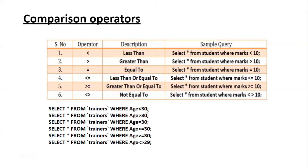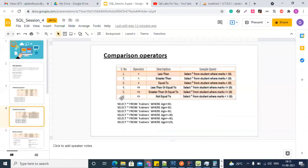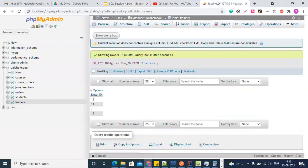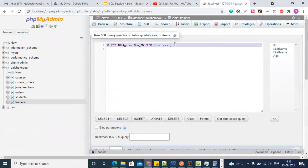In the trainers table we have an age column with different ages for different trainers. Based on different age comparisons we can see what output comes. For example: SELECT * FROM trainers WHERE age less than 30 - this fetches trainers whose age is less than 30. Then more than 30, equal to 30, less than or equal to 30, greater than or equal to 30, and not equal to 29.